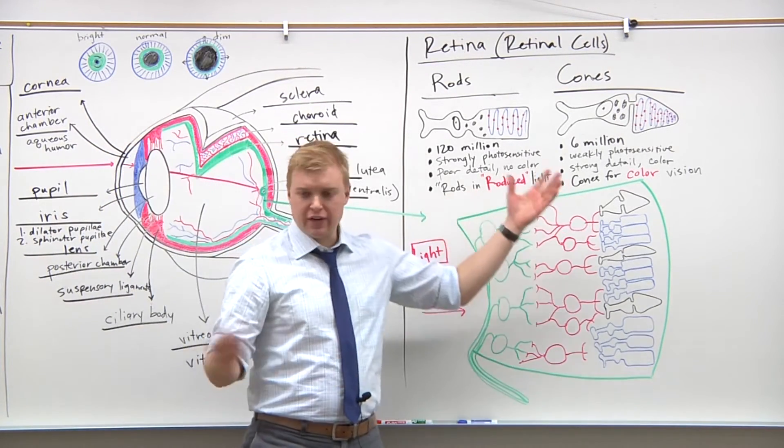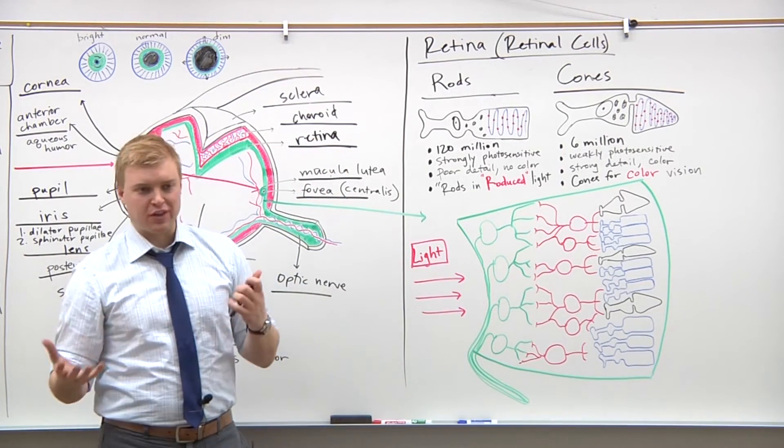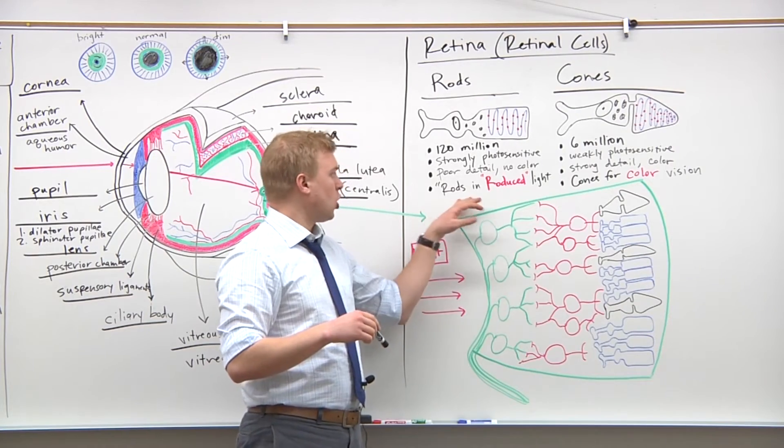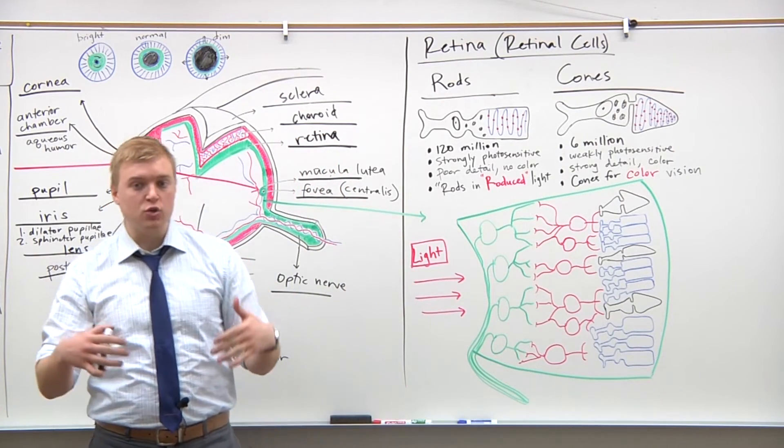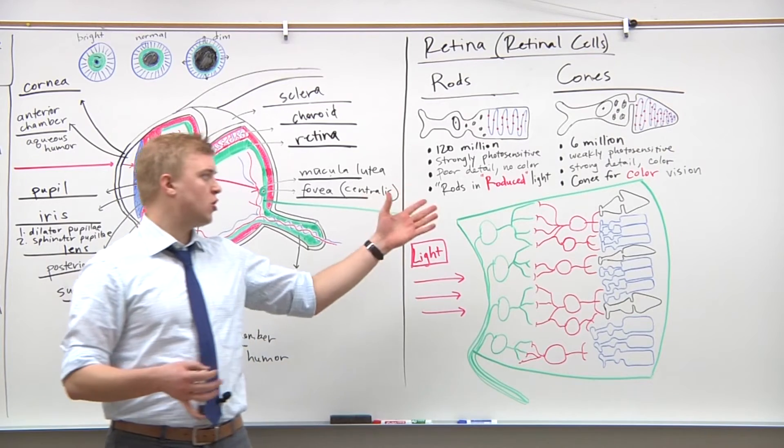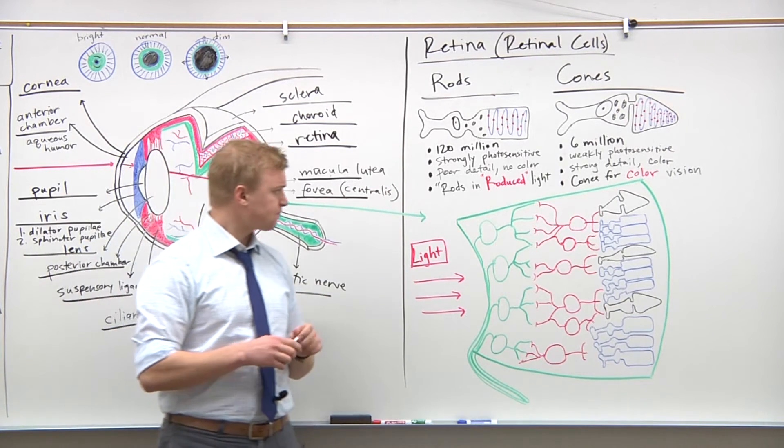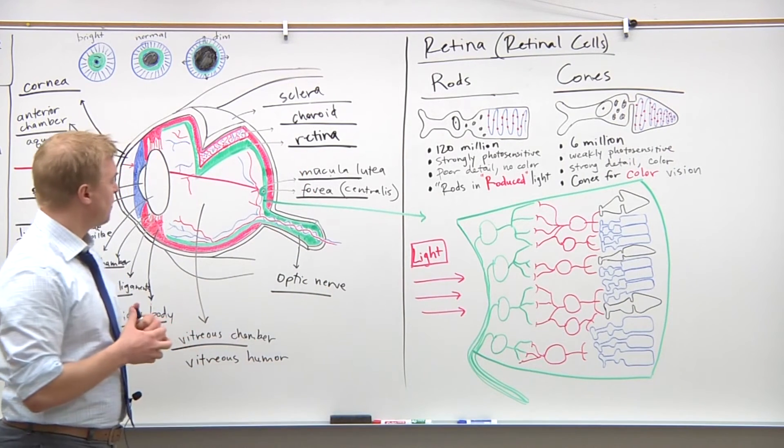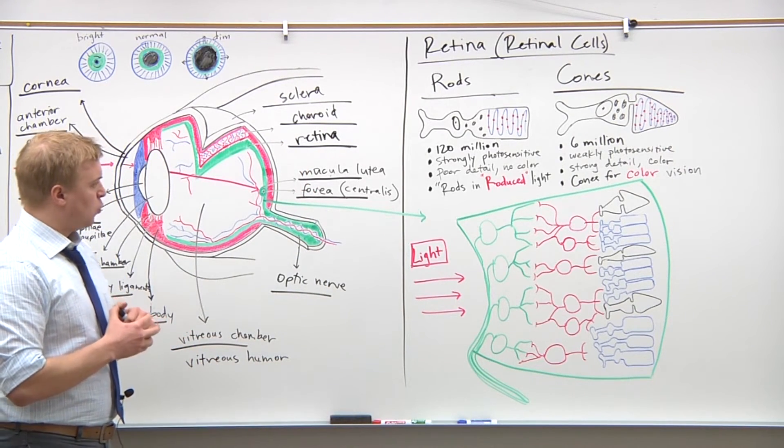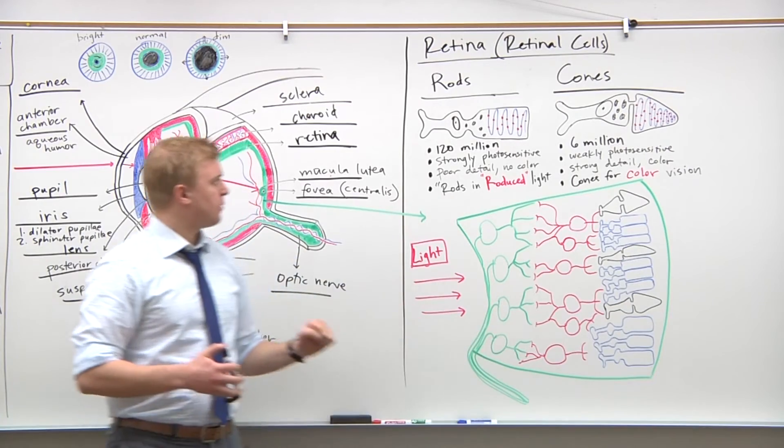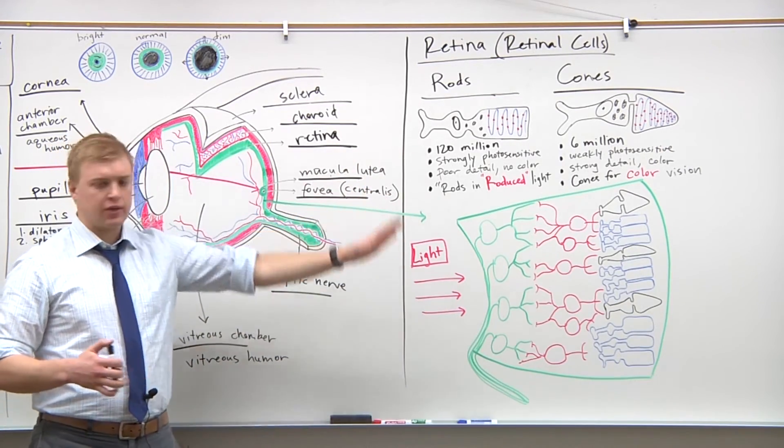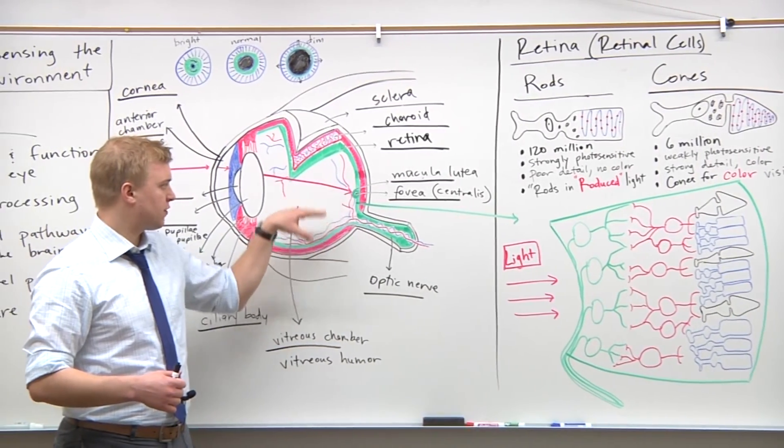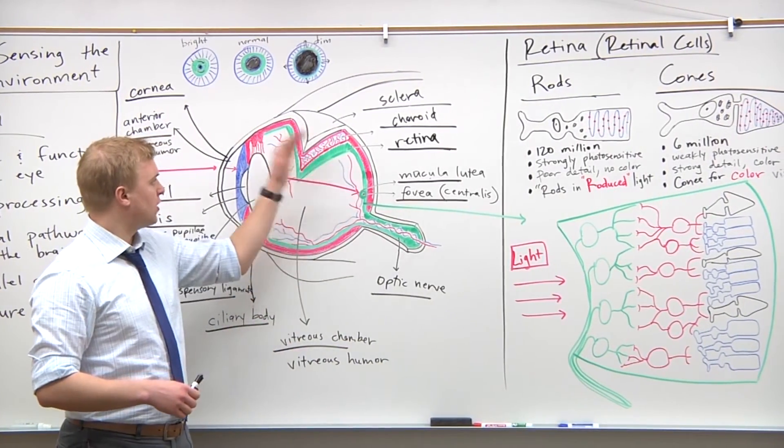And then lastly here, I don't know if you guys like mnemonics. I use them for the MCAT. But rods are going to function in reduced or raw-duced light, whereas cones are going to be for color vision. But other than that, we'll go over this in a second. Just differences between rods and cones, the duplicity theory of vision. You're going to get mainly cones here in the center of the retina and rods in the peripheral.